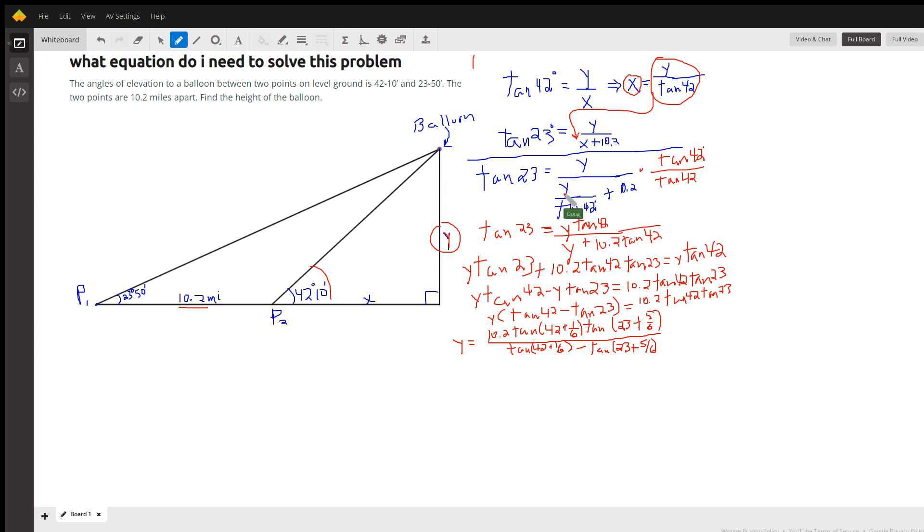So over here, after the substitution, I've got a complex fraction. I choose to multiply numerator and denominator of the big fraction by the tangent of 42 to turn this into a simple fraction. So, there's the simple fraction.